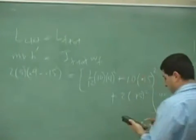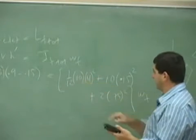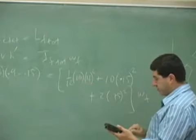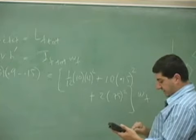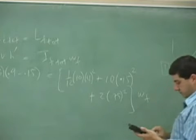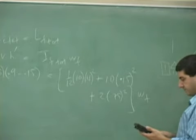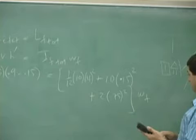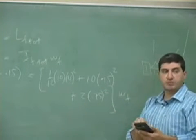You know what? Let's first calculate the moment of inertia here separately because we're going to need this later on. So, this one comes out to be 16 times 10, 160 divided by 12 plus 10 times 0.15 squared plus 2 times 0.75 squared. So, the total moment of inertia of the system is coming out 14.683.